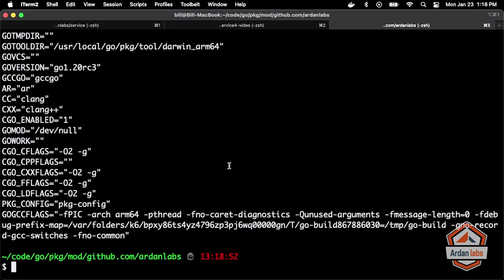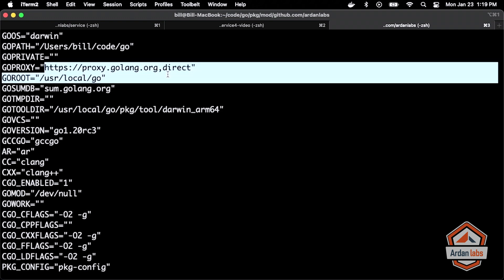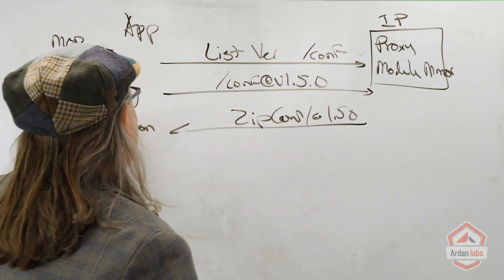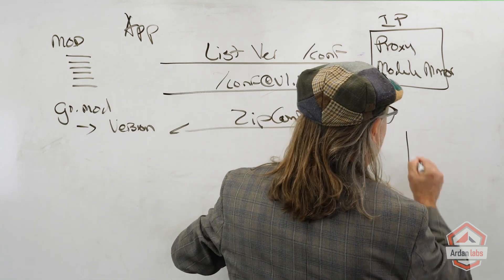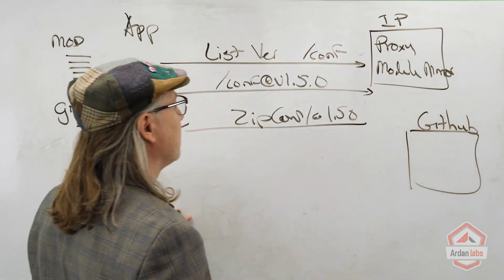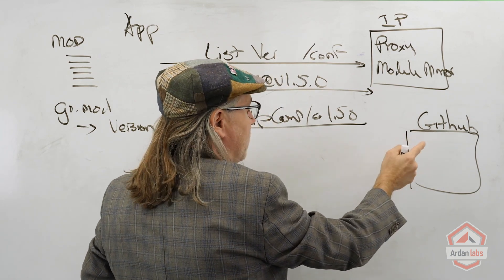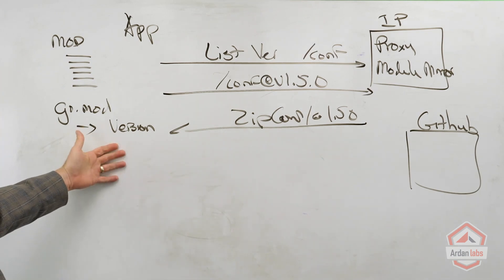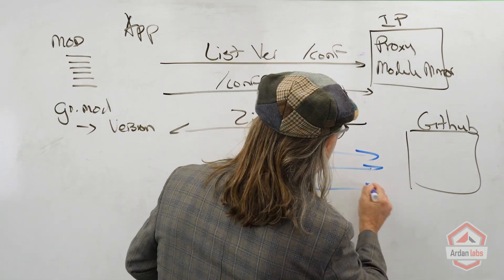Remember when we did go env for GOPROXY there was a comma direct? So we could change GOPROXY to get rid of the proxy server and just keep direct. That means I'm telling the go tooling: don't go to the proxy server anymore, go to GitHub directly — ask GitHub what the versions are, pull the files off GitHub directly, and write to the mod file.